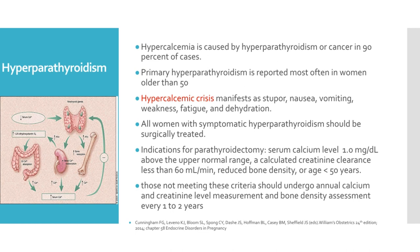Hypercalcemia is caused by hyperparathyroidism or cancer in 90% of cases, and primary hyperparathyroidism is reported most often in women older than 50 years old. Hypercalcemic crisis manifests as polyuria, nausea, vomiting, weakness, fatigue, and dehydration. All women with symptomatic hyperparathyroidism should be surgically treated. The indications for parathyroidectomy include a serum calcium level that is 1 mg per deciliter above the upper normal range, a calculated creatinine clearance less than 60 ml per minute, reduced bone density, or age less than 50 years. Those not meeting these criteria should undergo annual calcium and creatinine level measurement and bone density assessment every 1 to 2 years.